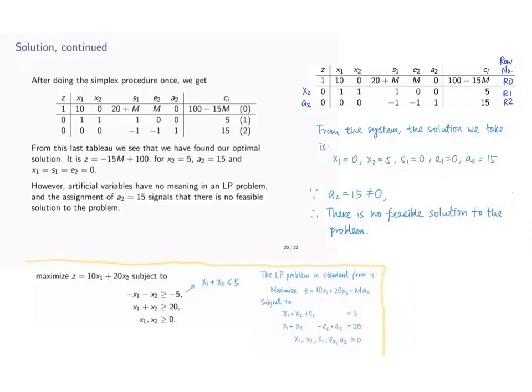As you can see that having x1 equals 0 and x2 equals 5, it is not enough to have x1 plus x2 to be greater than or equal to 20. It is because a2 equals 15 makes a contribution to the second constraint at the left-hand side so that it fulfills the second constraint.